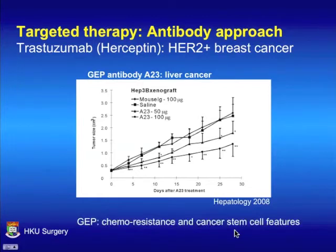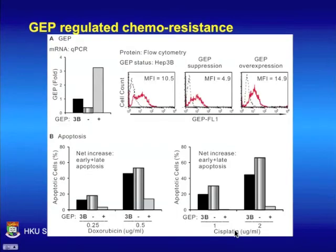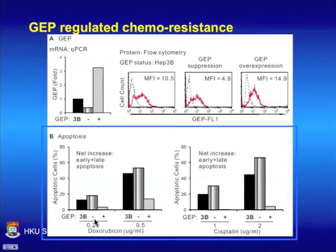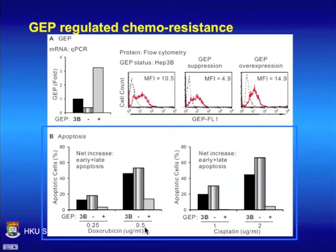In this study, we focus on the role of GEP in chemoresistance and cancer stem cells. First, we regulated the expression level in liver cancer cells by transfection experiment, then examined cell apoptosis under chemodrugs. Under low-dose doxorubicin, GEP suppression increased cell apoptosis, while GEP overexpression rendered the cells resistant to chemodrugs. The same result was observed with higher dose and with a different drug.